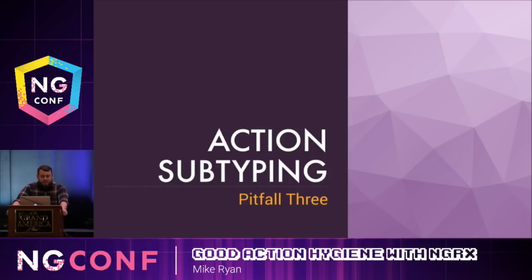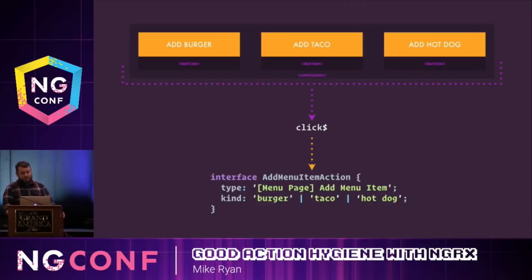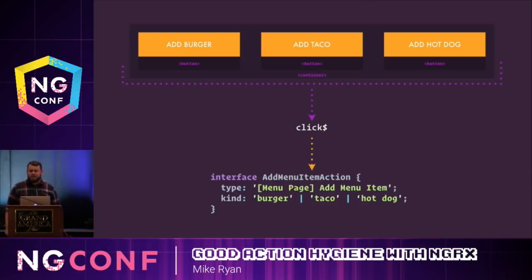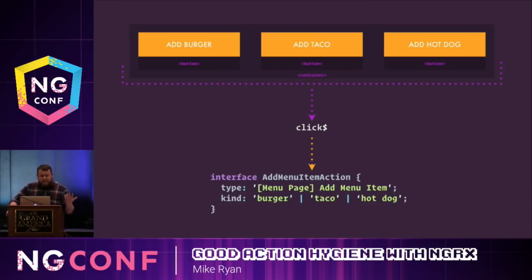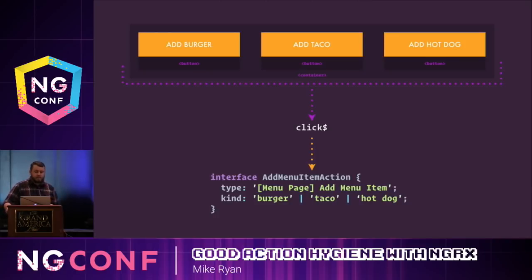The third pitfall is action subtyping. I really see developers fall into this pit when they want to handle click events for multiple options, or handle API responses and errors in a generic way. Going back to that menu page, instead of dispatching a unique action for every single button, we dispatch a generic 'add menu item' action and specify the kind as an additional property on that action. I don't have to write as many actions this way, but there are pitfalls when you want to handle just a specific kind within this action type — this process is what I call action subtyping.